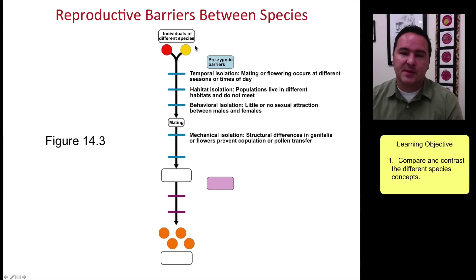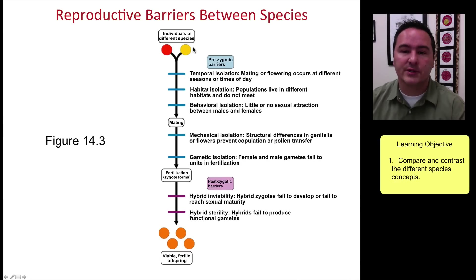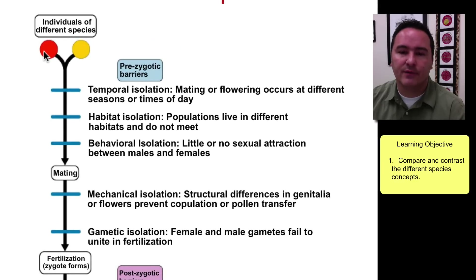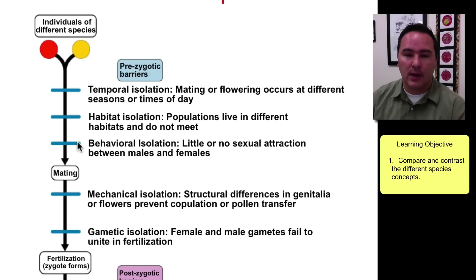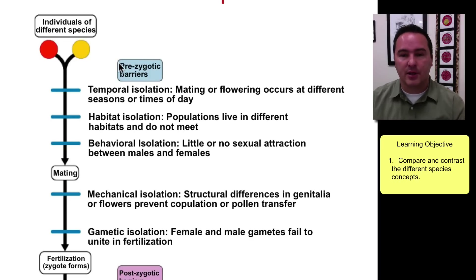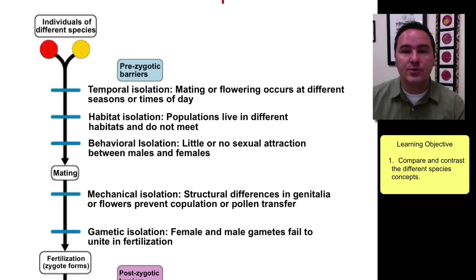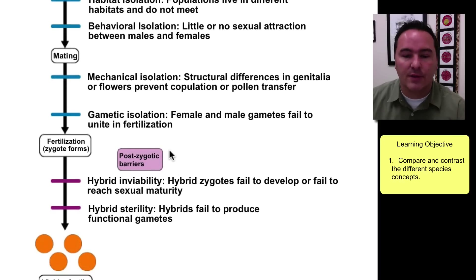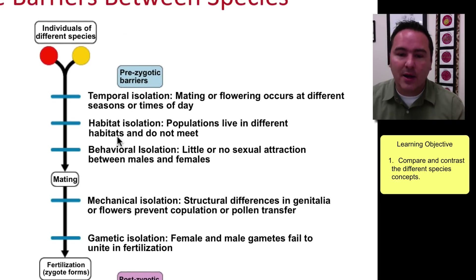Nonetheless, the biological species concept sets up a nice model to work within. This diagram shows that if you have individuals from two different populations, barriers can be introduced to inhibit gene flow. Some of these barriers are prezygotic — they happen before the zygote is made. There are five prezygotic barriers, and two barriers that can happen after the zygote has been formed.